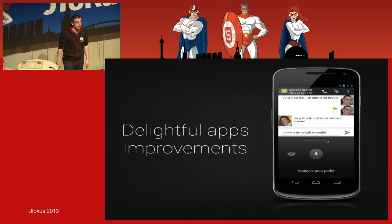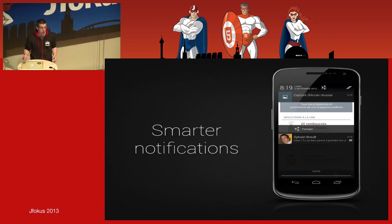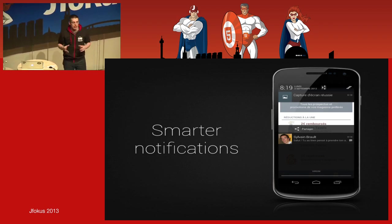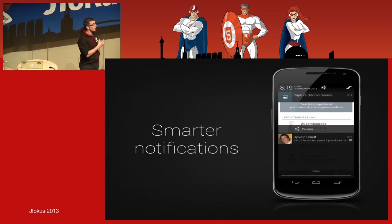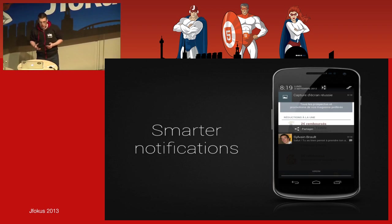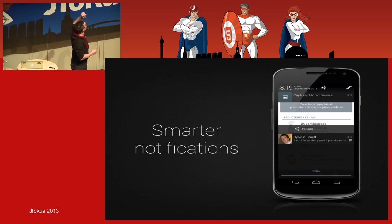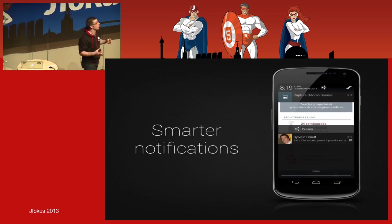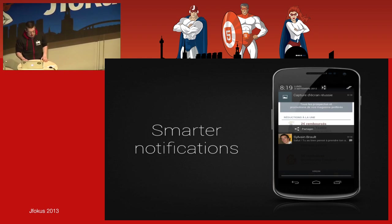Notifications have always been something very important in Android from day one — a system that lets applications notify users that a global event has occurred. Starting Android Jelly Bean 4.1, notifications have been completely redesigned. You now have smarter notifications. For example, a screenshot notification can display the screenshot taken and an action like 'share.' You can now perform actions without even opening the underlying app, which is a huge improvement.